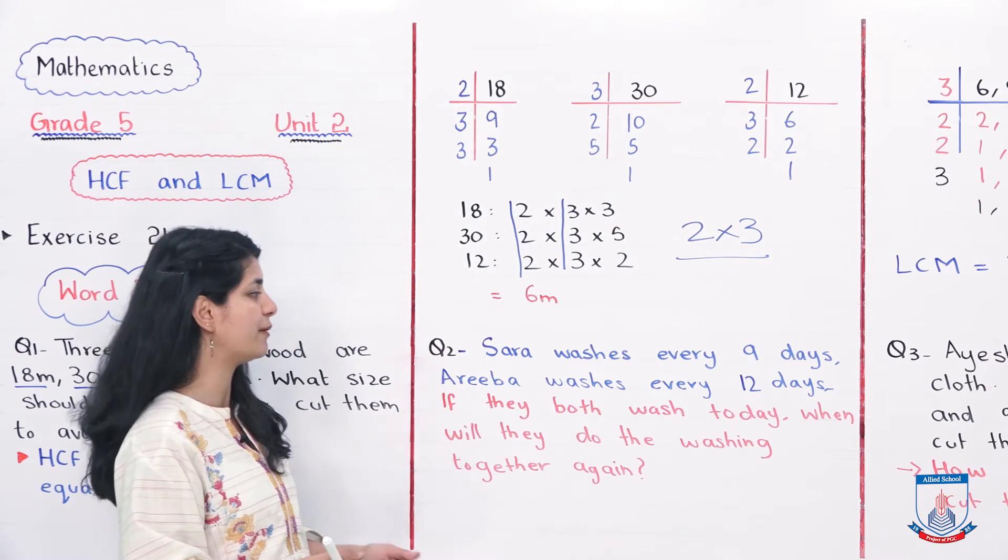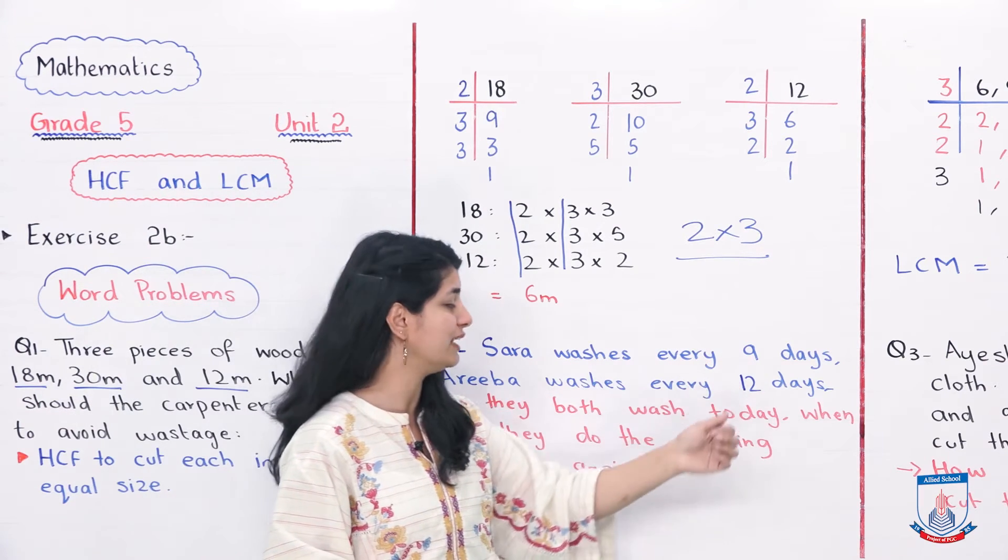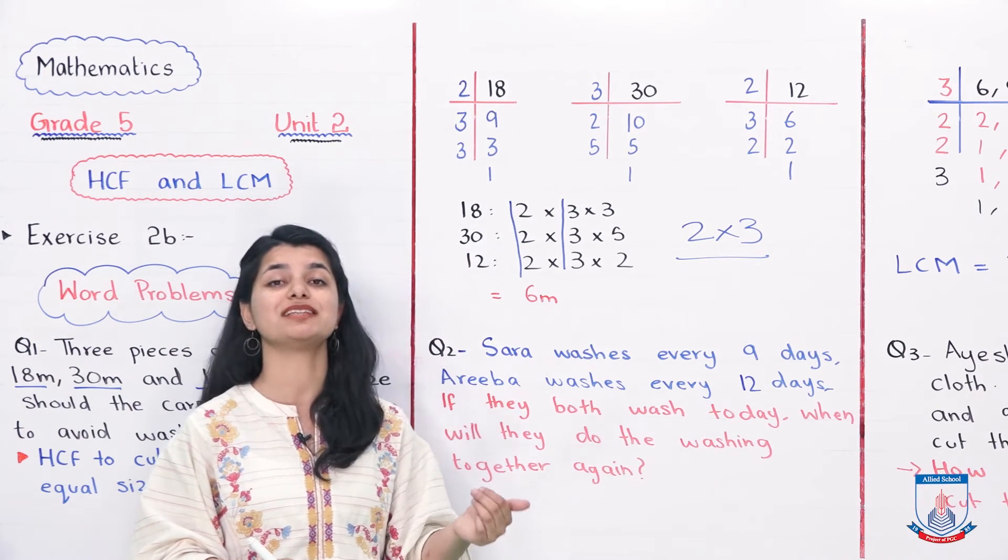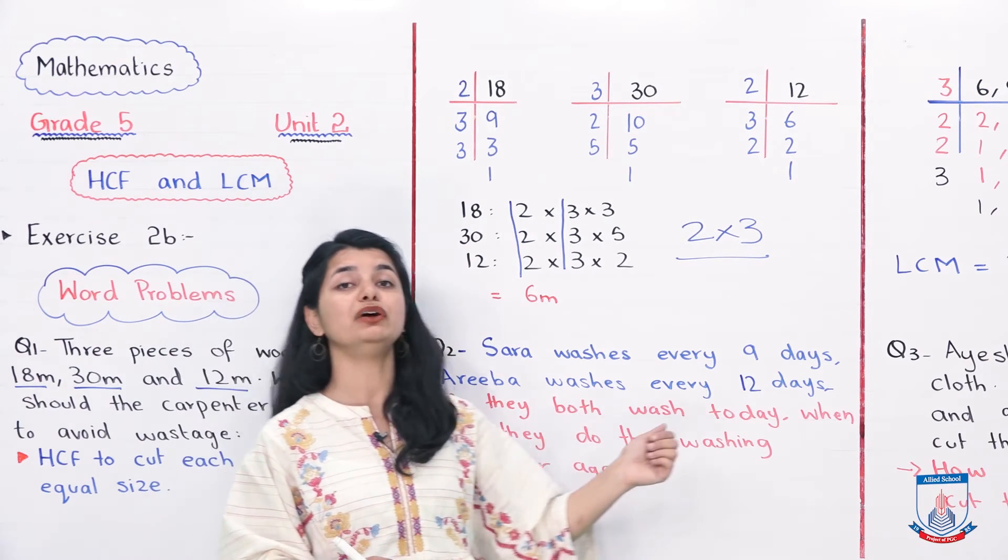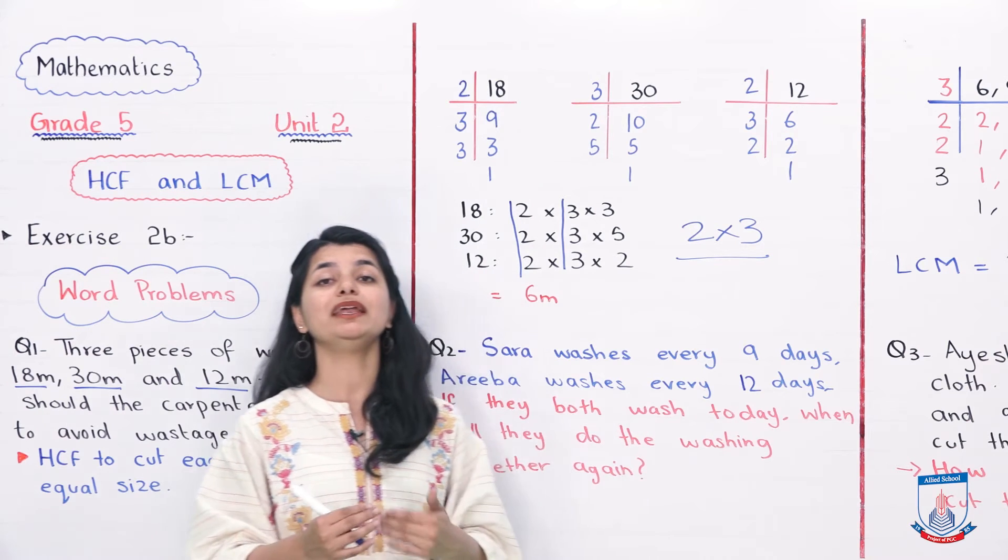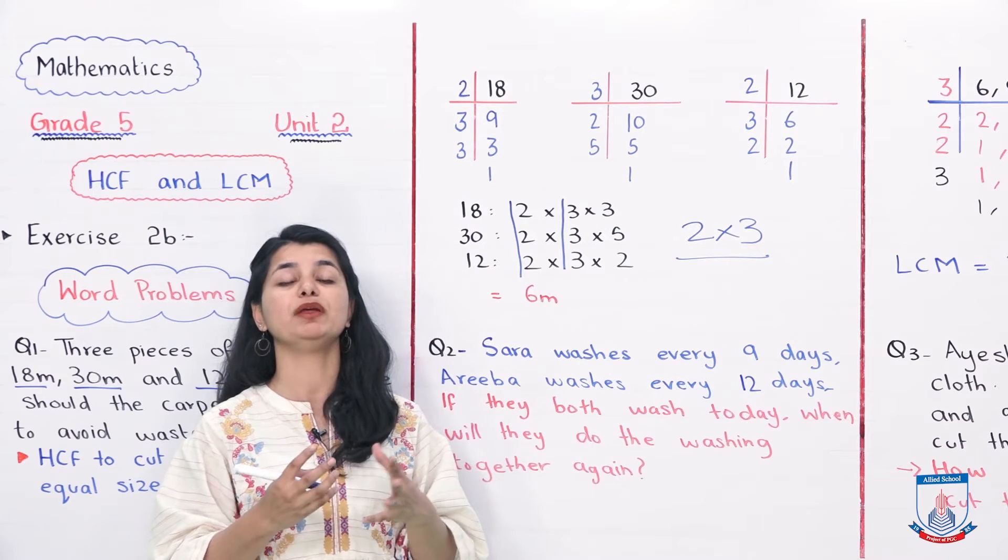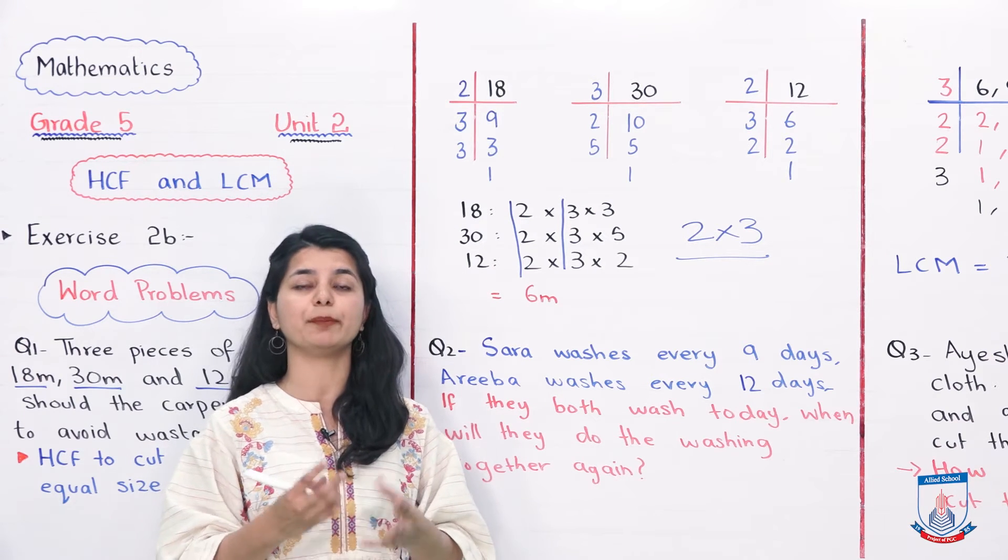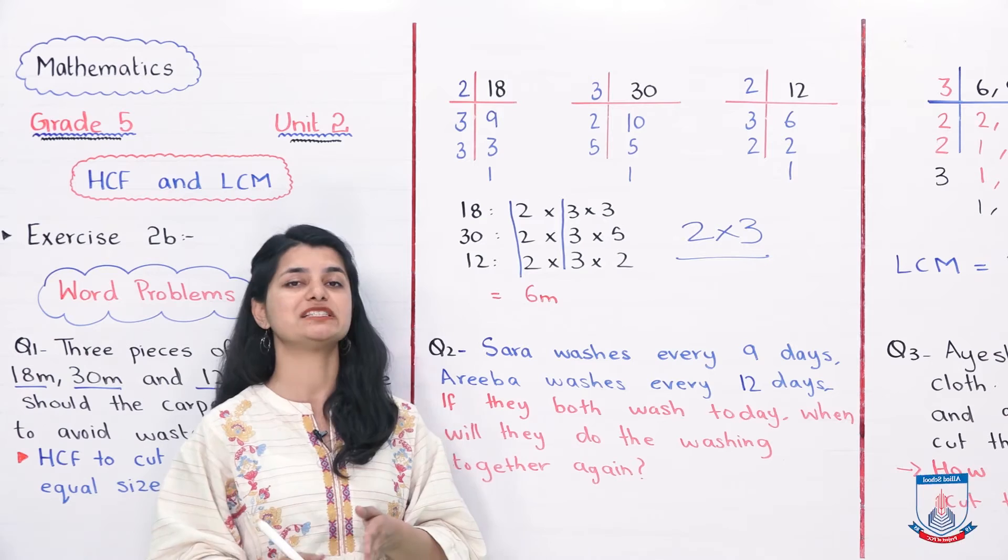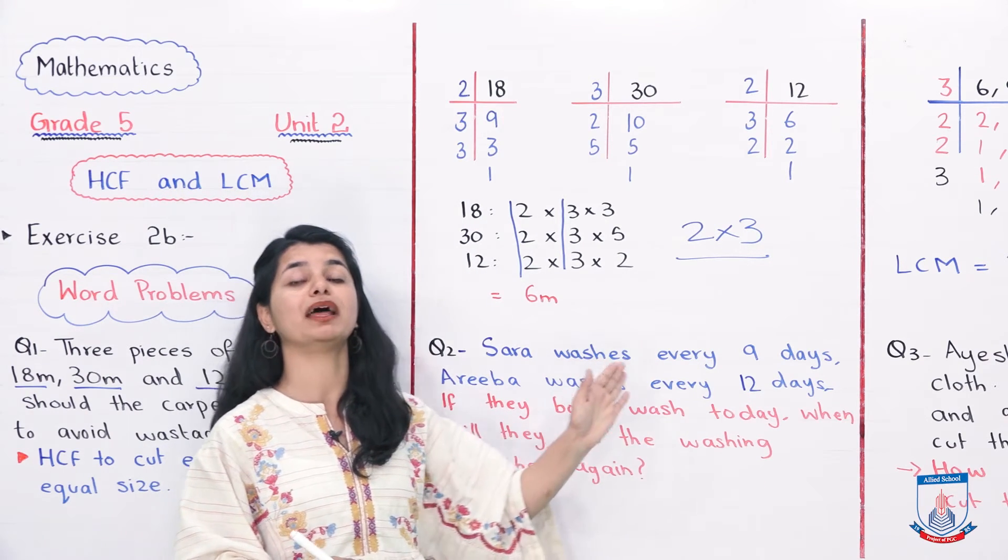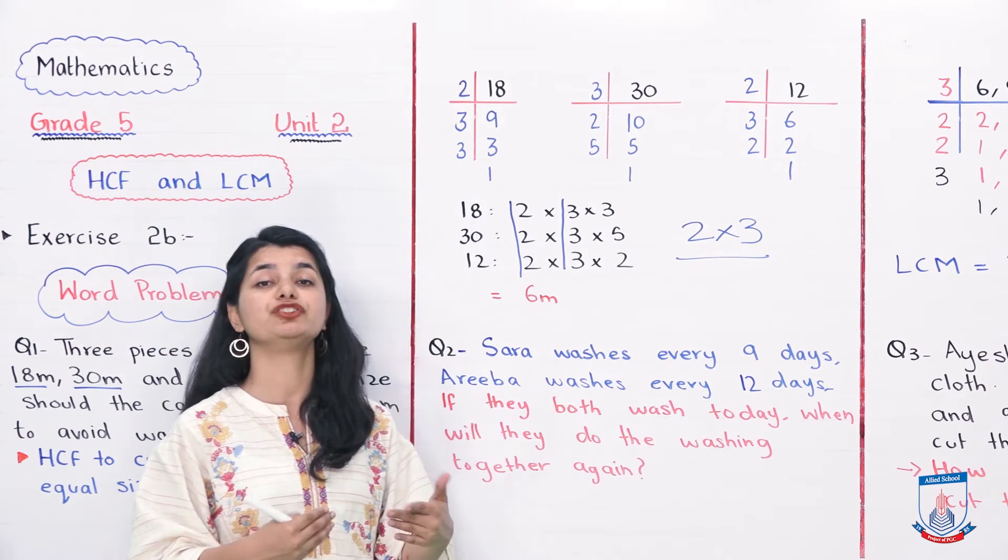Question number 2 is: Tara washes every 9 days, Ariba washes every 12 days, and Neha washes every 6 days. If they all do the washing together today, when will they next do the washing together? We know that 3 different people do washing on different days. Tara washes every 9 days, Ariba washes every 12 days, and Neha washes every 6 days.